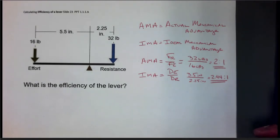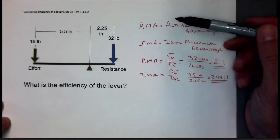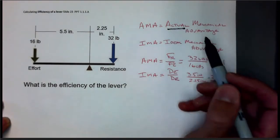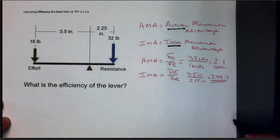So it's really pretty easy because efficiency is just a ratio of AMA to IMA. And as a review, AMA is actual mechanical advantage and IMA is the ideal mechanical advantage.